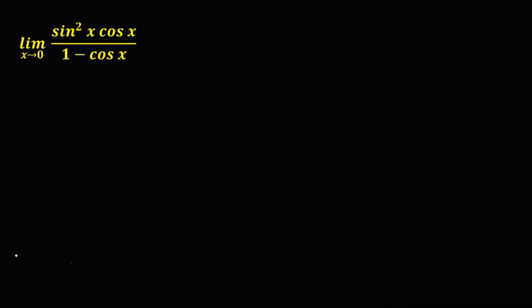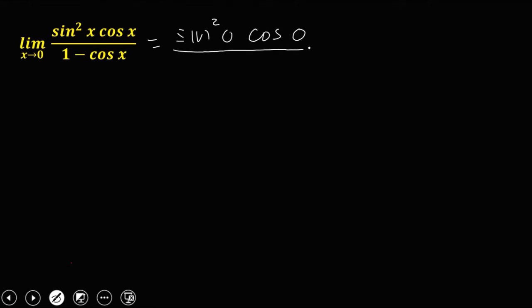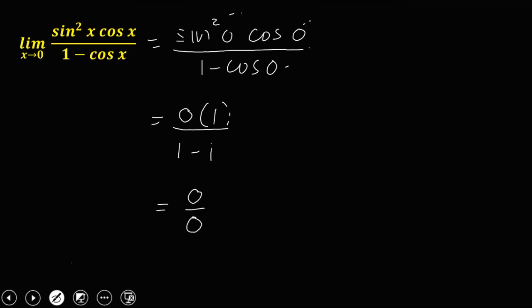The limit of sine squared x times cosine x over 1 minus cosine x as x approaches 0. If we apply direct substitution, this becomes sine squared 0 times cosine 0 over 1 minus cosine 0. Since sine 0 equals 0 and cosine 0 equals 1, we get 0 over 0, which is indeterminate.